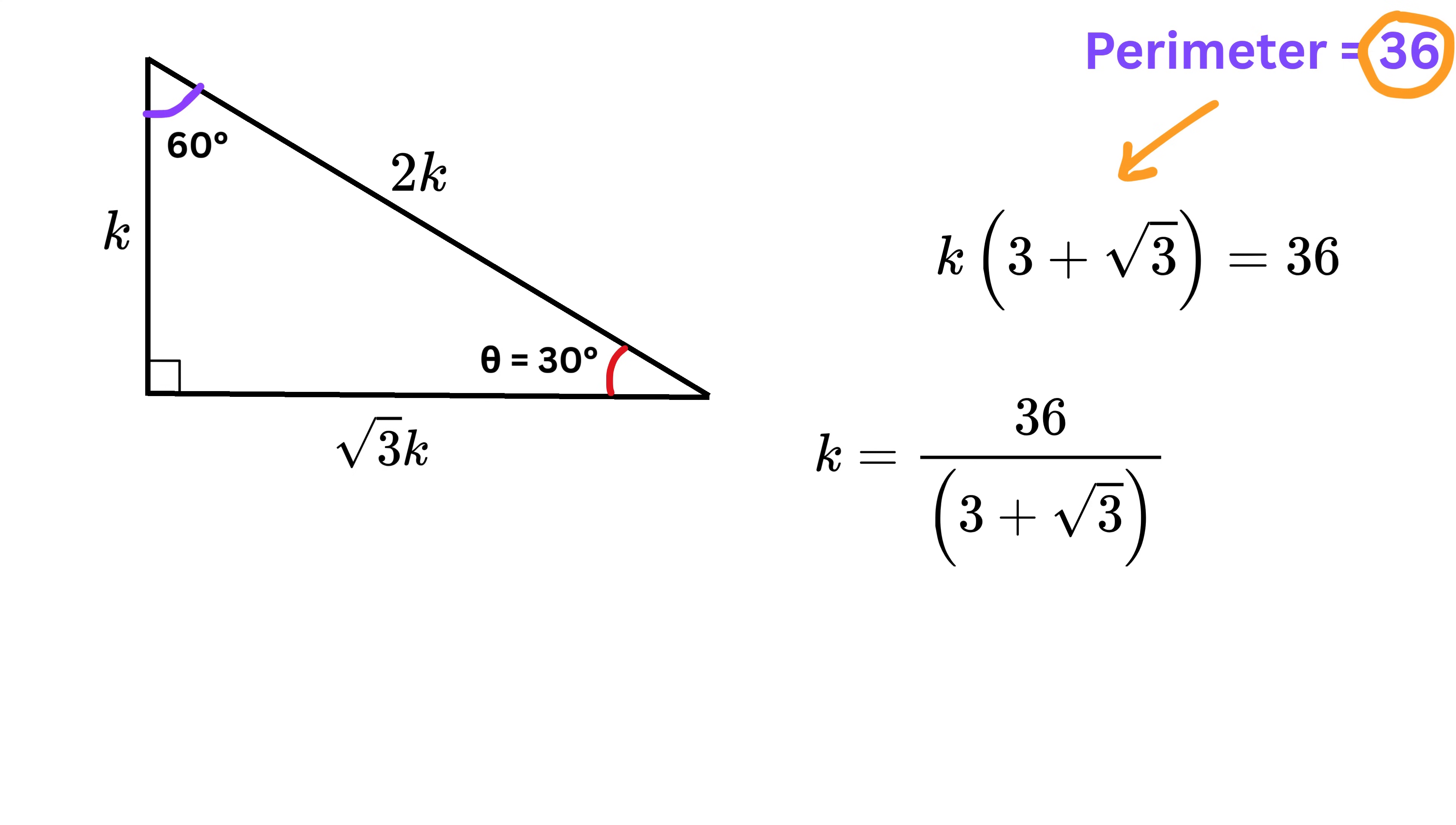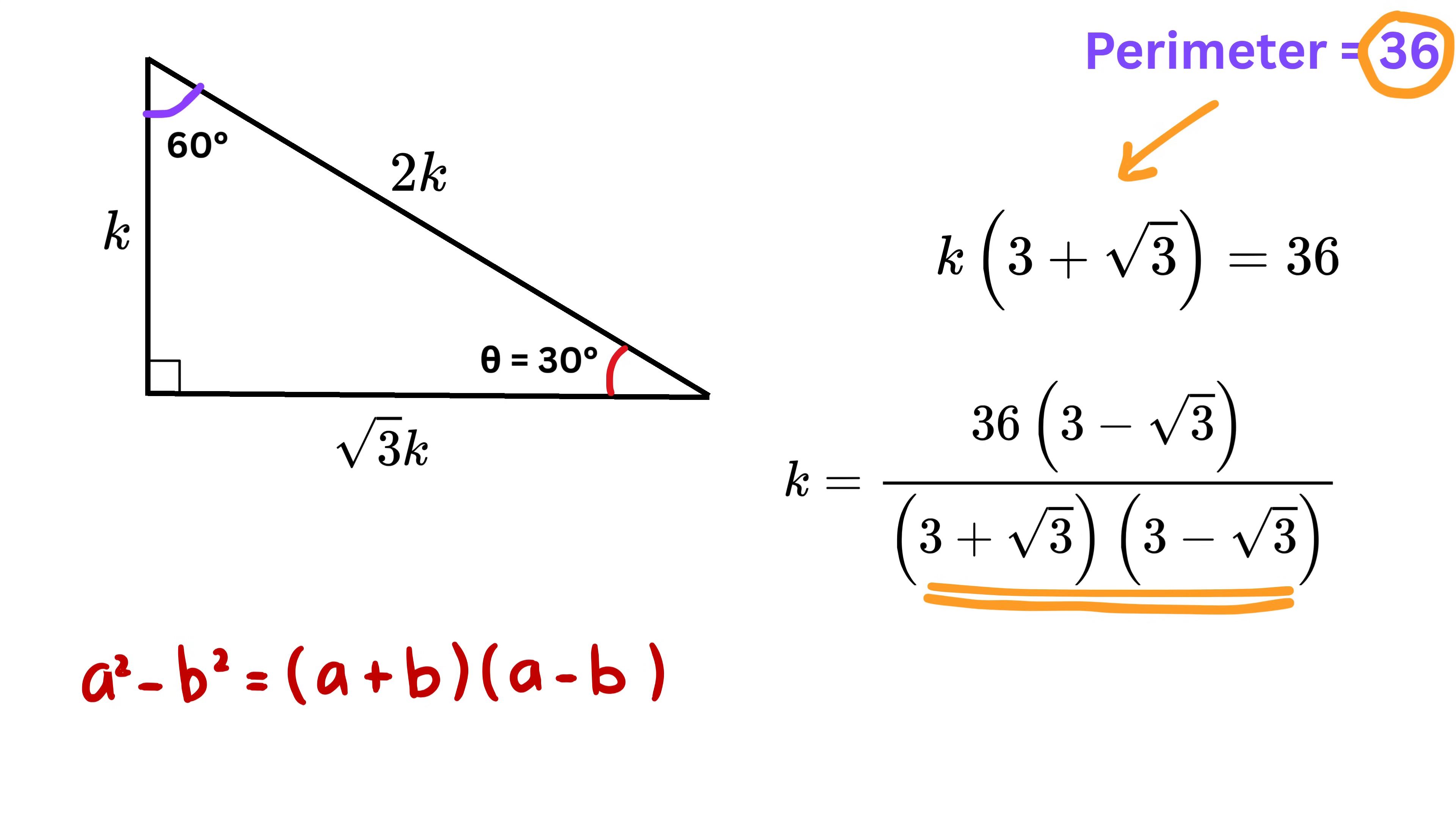Therefore, k is 36 divided by 3 plus root 3. To make this number nicer to work with, we will rationalize the denominator by multiplying numerator and denominator by 3 minus root 3. Now simplify the denominator first. It is of the form a minus b times a plus b, which is equal to a square minus b square. So it becomes 3 square minus root 3 square, which is 9 minus 3, or 6.